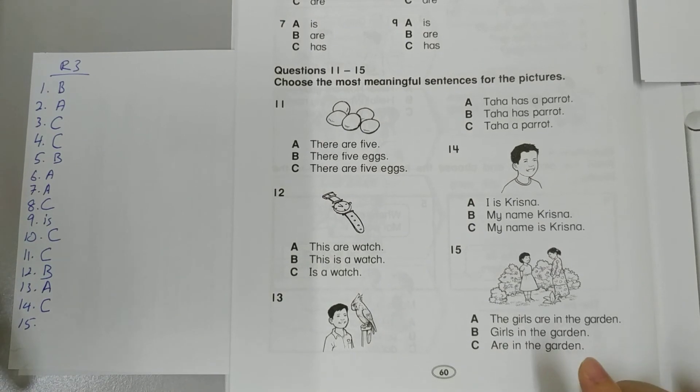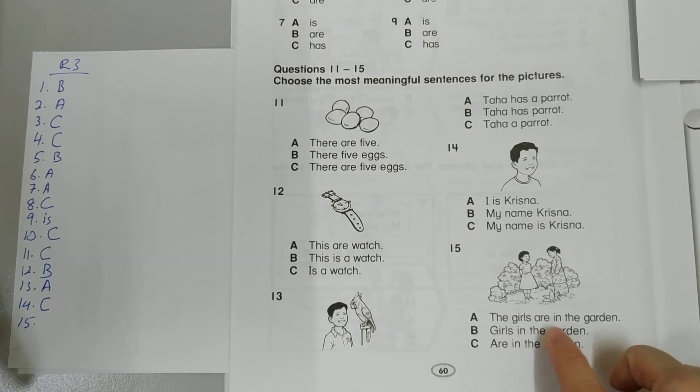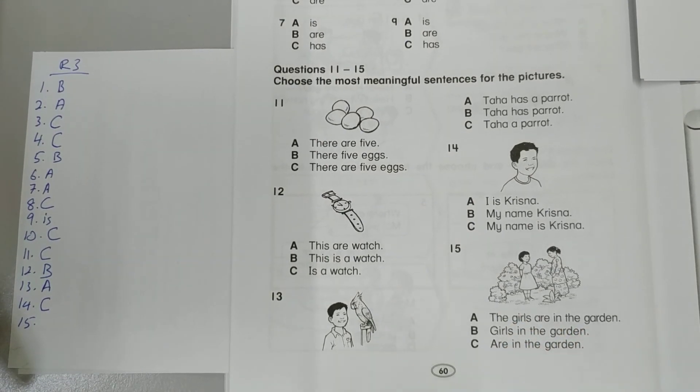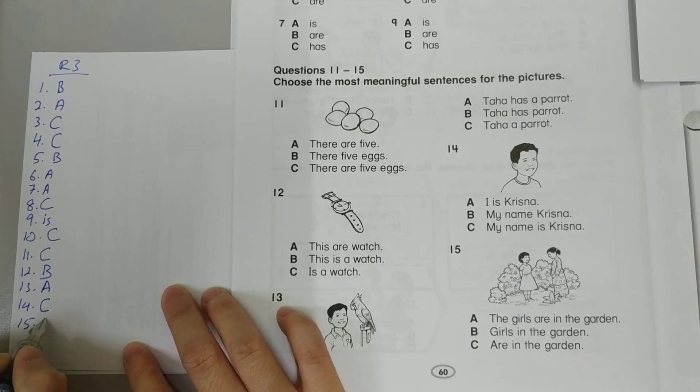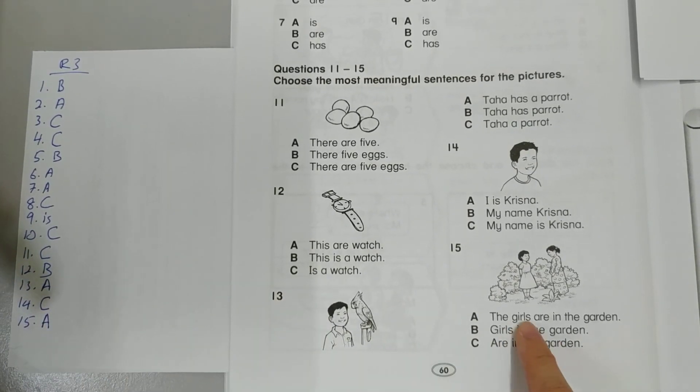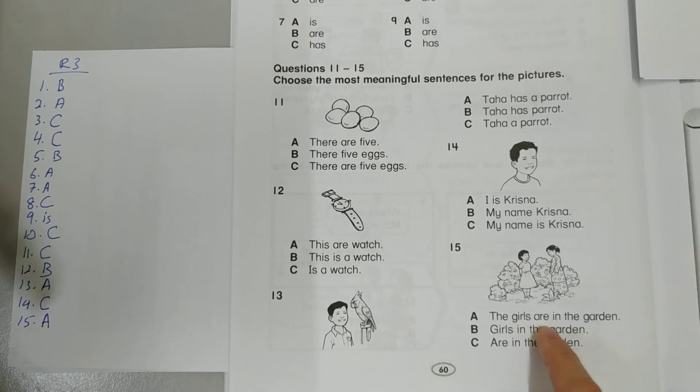Now 15. The girls are in the garden. Very good. So 15 is A. That is correct. Because the girls are plural. That's why we use are. Where are they? In the garden.